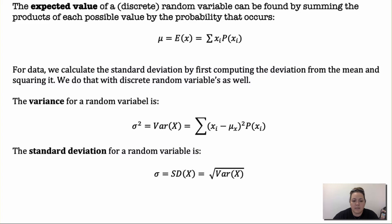Variance is computed by taking each value minus the mean, squaring it, and multiplying it by its probability, then adding that for each value. That gives the variance, which is the standard deviation squared. To get the standard deviation, we take the square root of the variance.